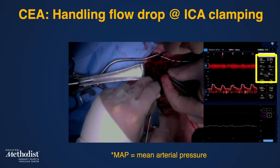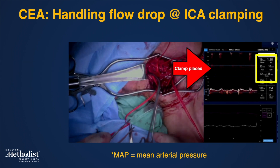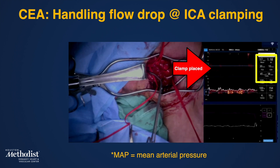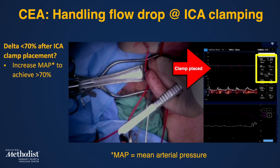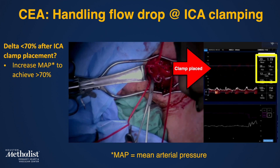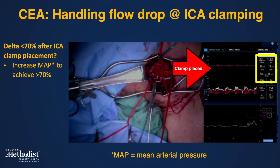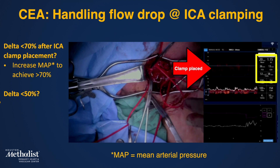During carotid endarterectomy, clamping of the ICA will result in the most significant flow decrease in the MCA; the rate of decrease depends on the presence of established collaterals. If delta drops below 70%, the anesthesiologist should aim to increase mean arterial pressure (MAP), with the goal of restoring delta to greater than 70% — typically achieved with a MAP between 90 and 105 mmHg. If delta decreases below 50% after clamping, the first step is again to increase MAP. If there is not a sufficient response to MAP increase, shunt placement is indicated.